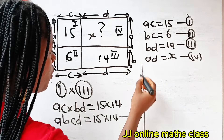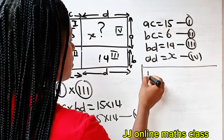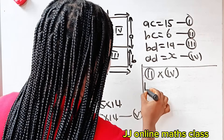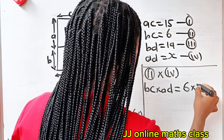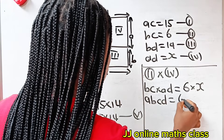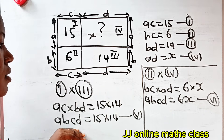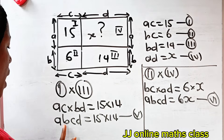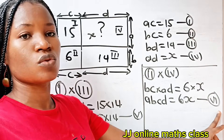Now, if we multiply equation 2 by equation 4, we get BC times AD, which equals 6 times X. BC times AD is also A·B·C·D, so A·B·C·D equals 6X. Let's call this equation 6. Since both equation 5 and equation 6 equal A·B·C·D, they have that in common.